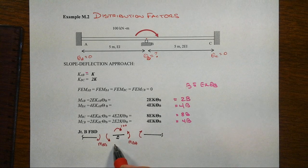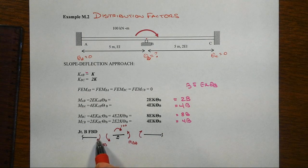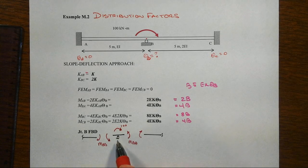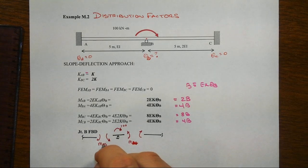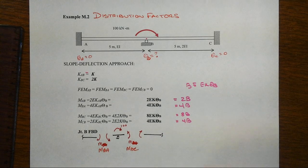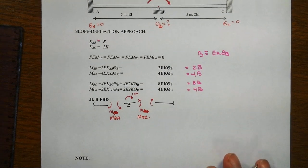Now go to the joint free body diagram, show the member end moments, clockwise positive on the member end, that means counterclockwise positive on the joint. We've got both of those, and of course that's not the right subscripts, that would be MBA and MBC for the proper subscripts there.